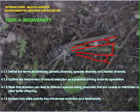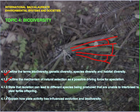In today's lesson we begin with definitions of the terms biodiversity, genetic diversity, species diversity, and habitat diversity. We outline the mechanism of natural selection as a possible driving force for speciation. For 4.1.3, we state that isolation can lead to different species being produced that are unable to interbreed to yield fertile offspring. And for 4.1.4, we explain how plate tectonics has influenced evolution and biodiversity.